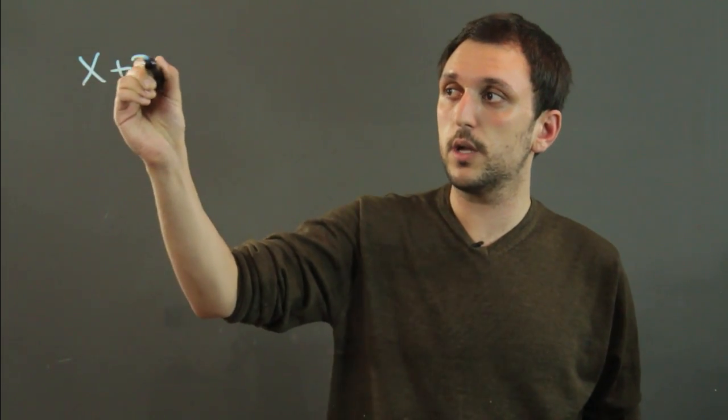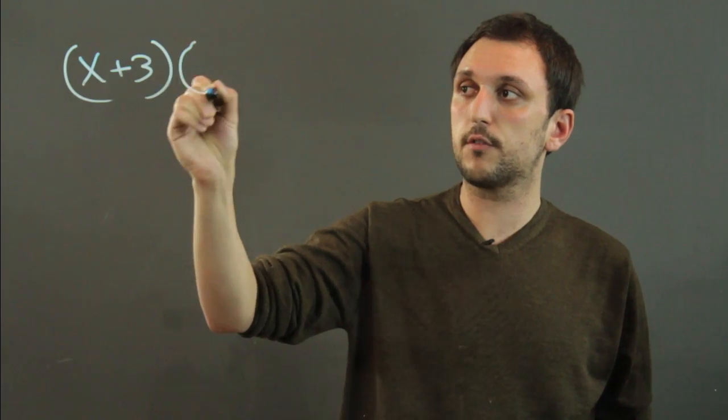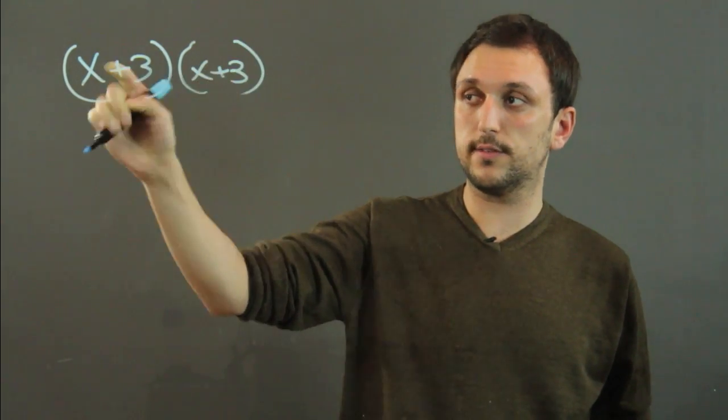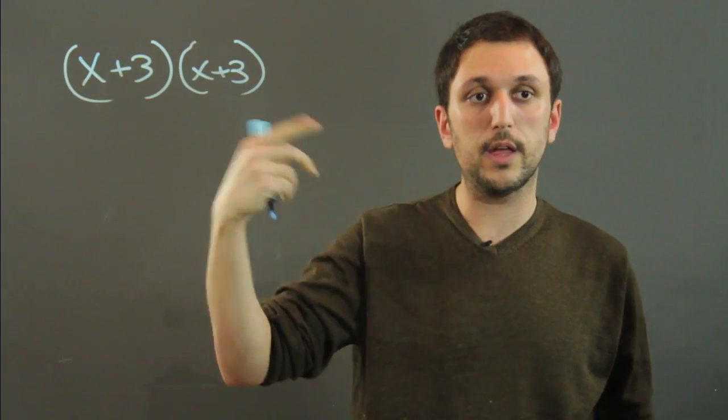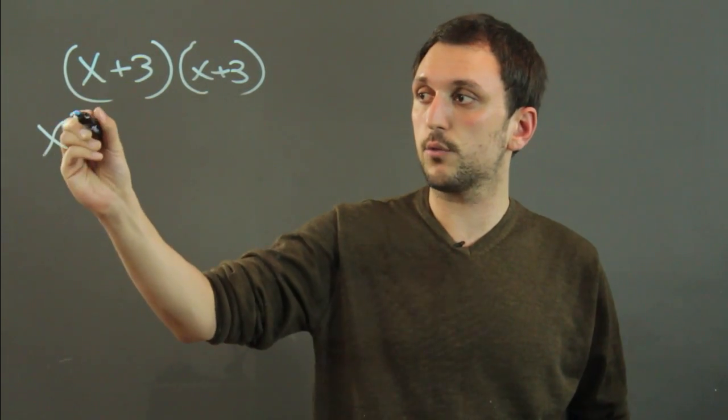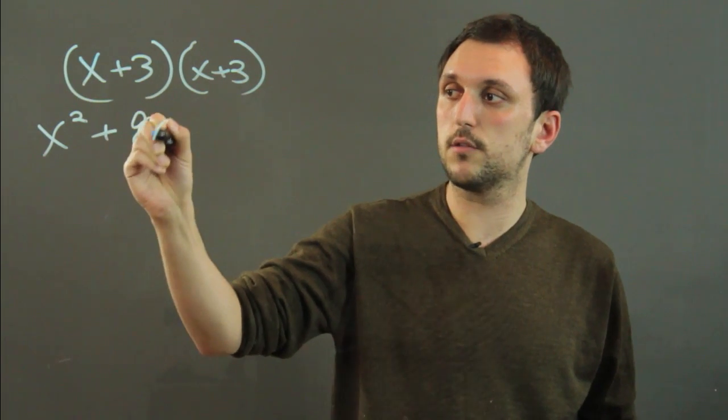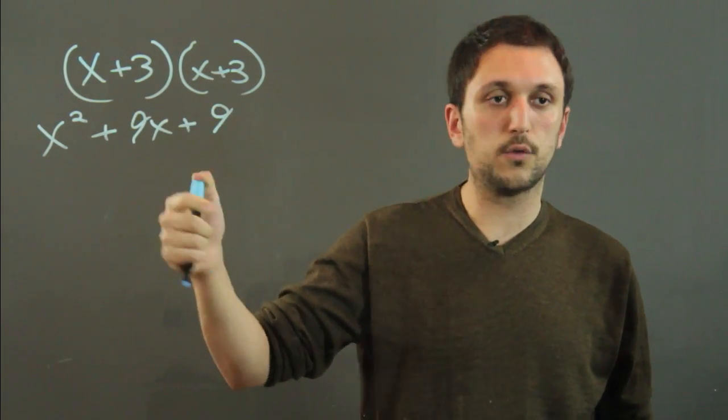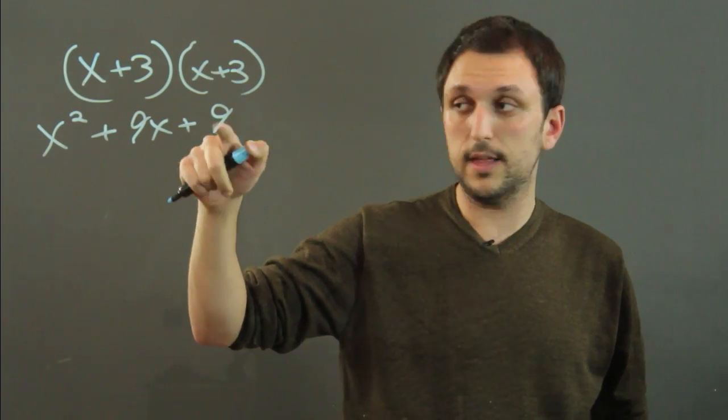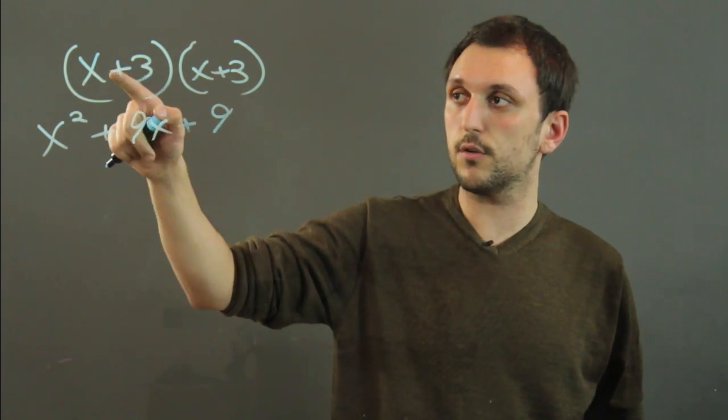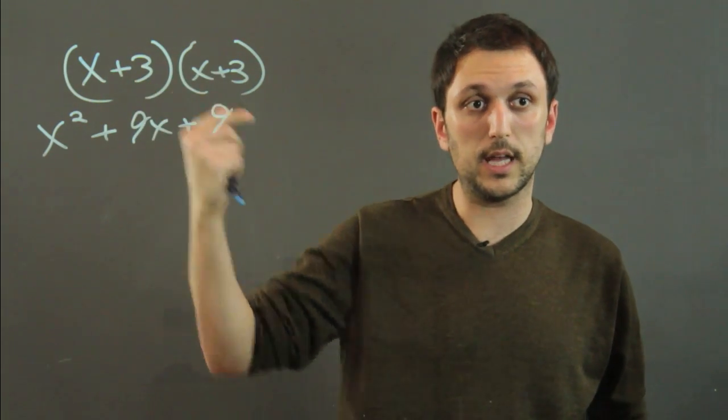Now, the best way to do it is to start with your two factored expressions. For example, if we say x plus 3 times x plus 3, well these are the same phrase, so if you multiply one by the other that's squaring it. And you would get x squared plus 9x plus 9. So now you have a quadratic expression that is a perfect square because it factors to two expressions that are exactly identical.